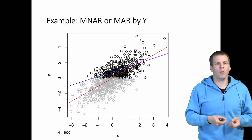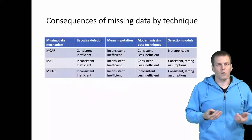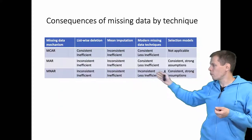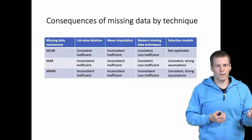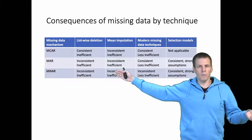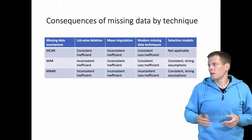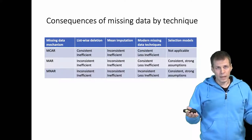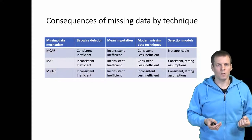So missingness on y is more severe than missingness on x in regression analysis. Now, what are the consequences for different techniques under different mechanisms? We will be talking about four techniques: listwise deletion, which drops a case if there is even a single missing value in any of the variables — the default in many statistical software packages — and mean imputation.